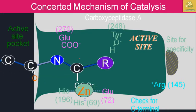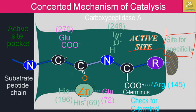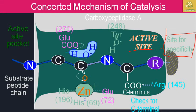The concentrated mechanism of catalysis involves the active pocket site where the substrate peptide enters, and a carbonyl-hydroxyl peptide A is taken for its specificity. The compound fits and promotes the final product, where the co-enzyme reactive agent is inserted and used to form the final product.